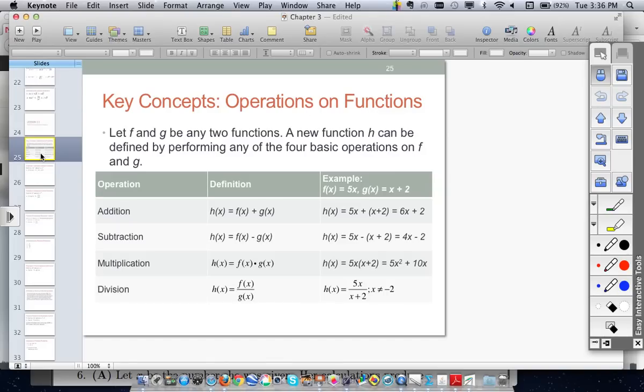If x is equal to negative 2, that makes the denominator zero, which means that this is no longer a number. So we're restricted there, but everything else would work fine.